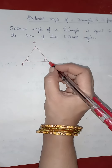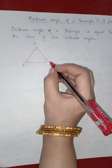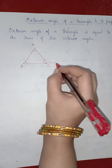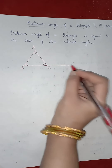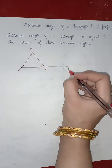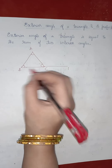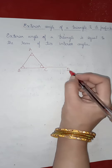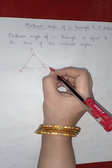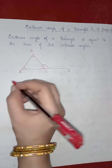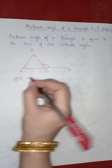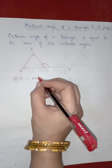An exterior angle is obtained by extending one of the sides to the external side. If you extend the base B, C till a point D, then angle A, C, D is the exterior angle.